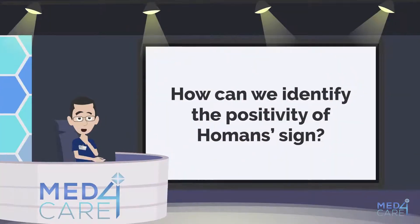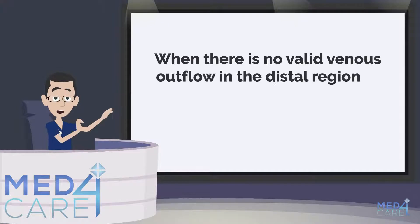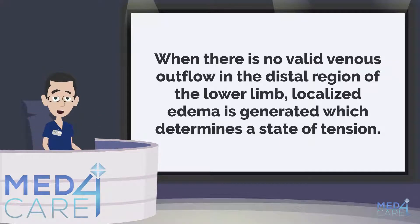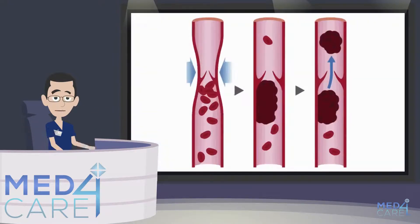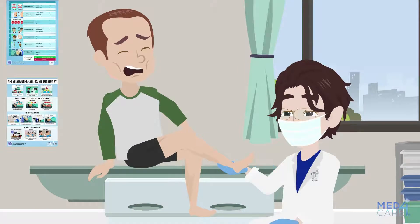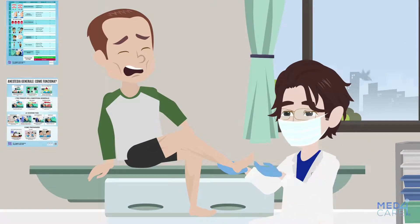How can we identify the positivity of Hohmann's Sign? When there is no valid venous outflow in the distal region of the lower limb, localized edema is generated which determines a state of tension. When the doctor performs dorsiflexion, the structures compressed by venous thrombosis are stretched. This procedure generates pain and a feeling of resistance, causing involuntary knee flexion.